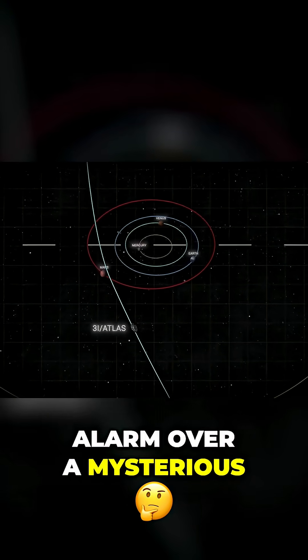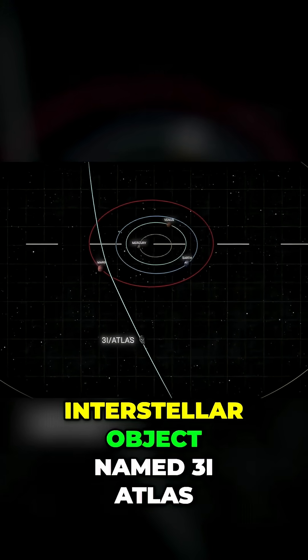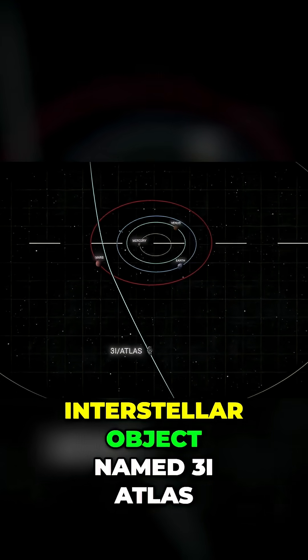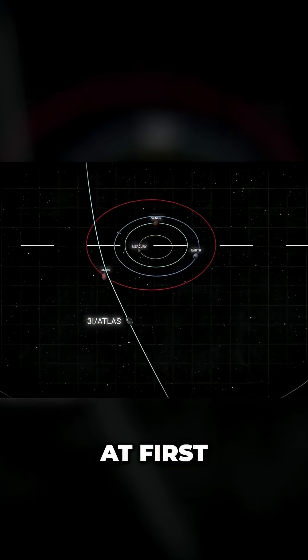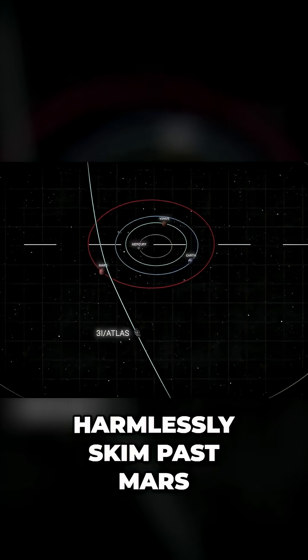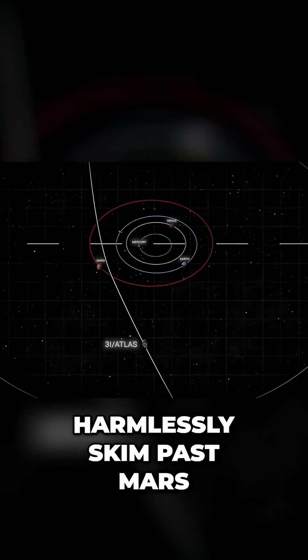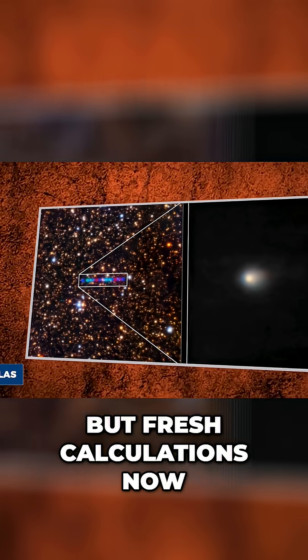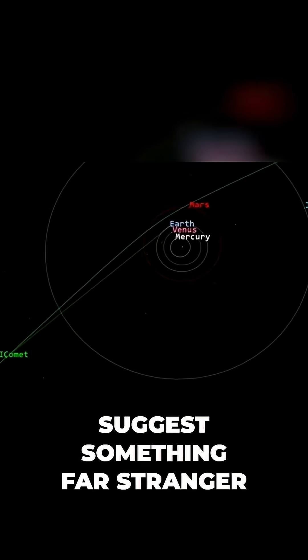Astronomers are sounding the alarm over a mysterious interstellar object named 3I Atlas. At first, scientists thought it would harmlessly skim past Mars, but fresh calculations now suggest something far stranger.